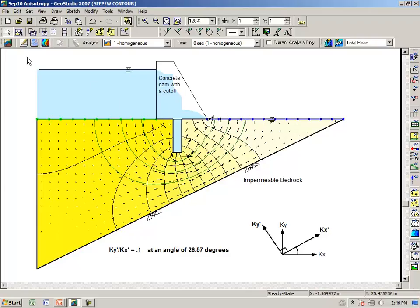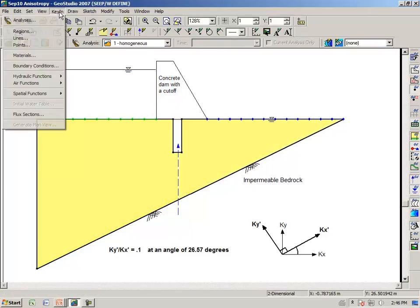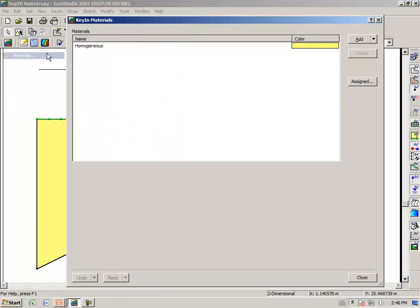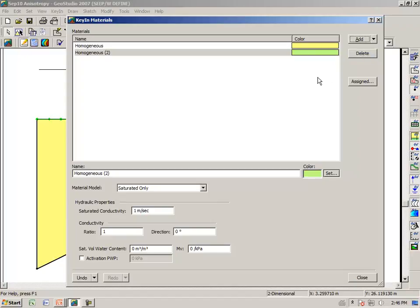Going back to the defined view then. Under key in materials, let us clone the first material and call it anisotropic.